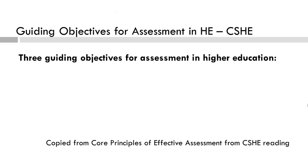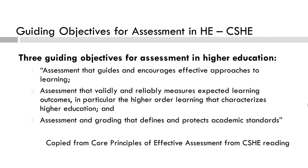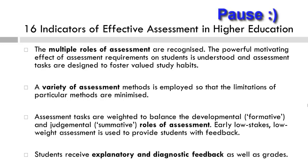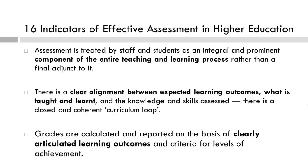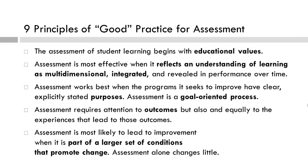These are three guiding objectives for assessment in higher education, and from these three objectives, the following 16 guidelines emerged. These are the first four of nine principles of good practice for assessment from the American Association of Higher Education. Please pause and consider the elements that relate to the validity and reliability of assessments. These are the last five, and lastly, here are the seven principles put forth by Volante.